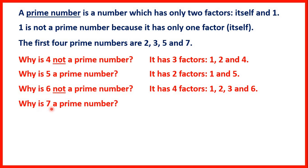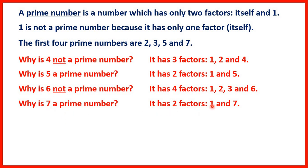So why is 7 a prime number? That's because it only has two factors. 7 is only in the 1 times table and the 7 times table, so that's why it's a prime number.